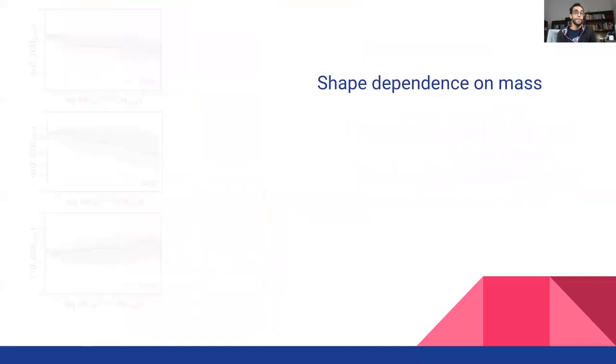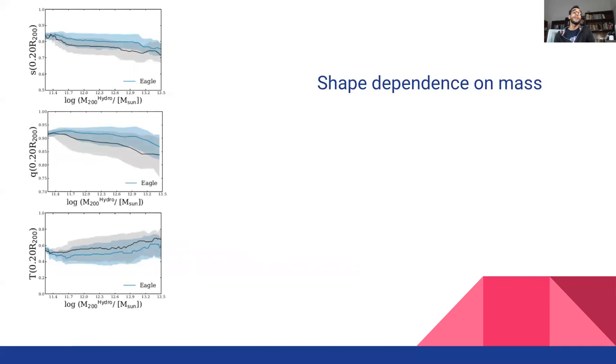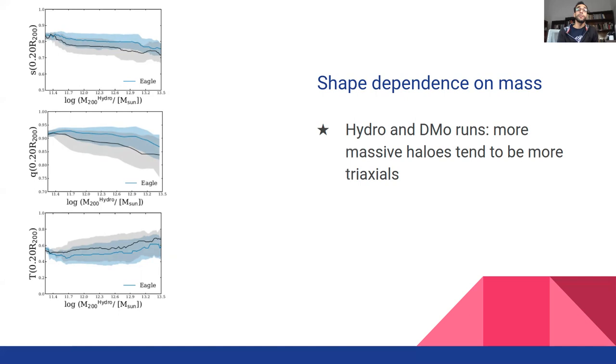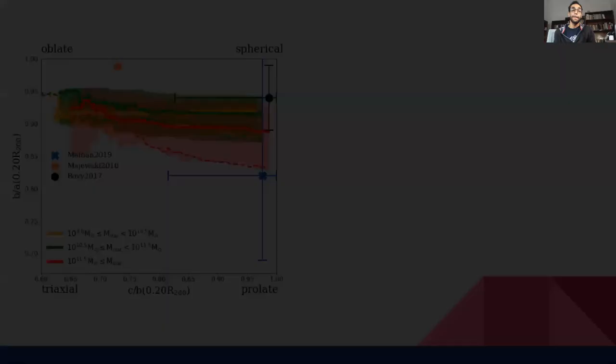We also explore the mass dependence of the shape parameters. In this figure, we show the shape parameters as a function of the virial mass. We can see that more massive halos tend to be more triaxial. But when we consider the dependence on the stellar to halo mass, this trend inverts as described by previous authors.